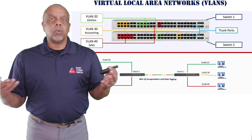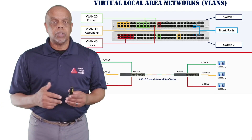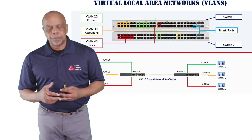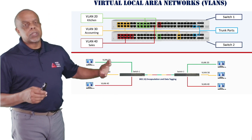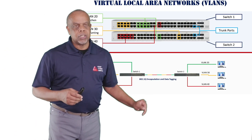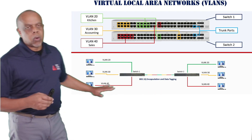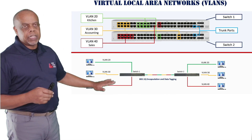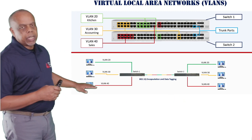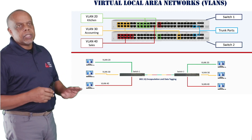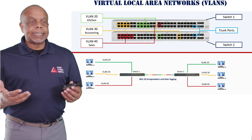If I want different VLANs to talk to each other, I have to have a Layer 3 device in the middle to do inter-VLAN routing. But this is how many networks are segmented — we can have different organizations or different functions within our organization all on separate VLANs on a switch. They can talk within their own VLAN but cannot share information across VLANs. This is how we provide some level of security and access control.